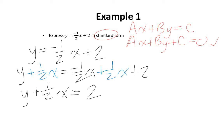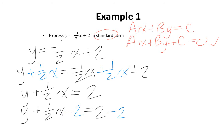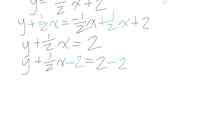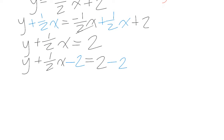Now let's move the 2 to the other side of the equation, which means we're going to subtract 2 from both sides of the equation. Therefore, 2 subtract 2 cancels out, which leaves me with y plus 1 over 2x subtract 2 equals 0.